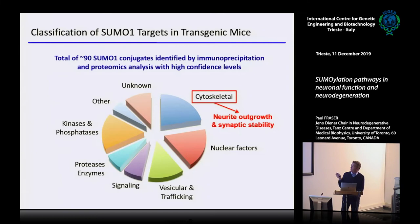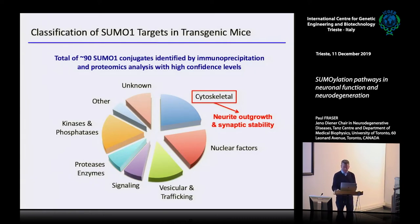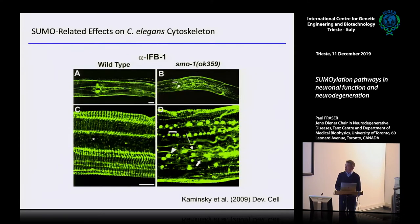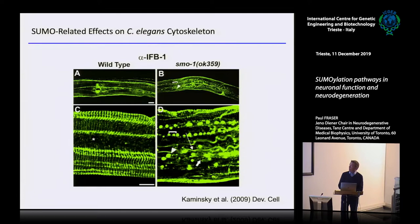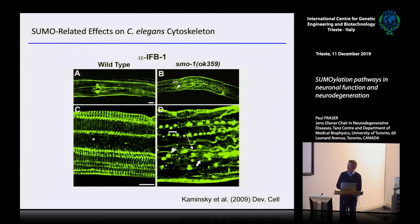The other proteins we were very interested in were cytoskeletal ones, involved in neurite outgrowth and dendritic spine stability. There had been some precedent for SUMOylation linked to the cytoskeleton — in C. elegans, which has one SUMOylation factor, SMO-1, knocking it out has a very dramatic effect on intermediate filaments, so that the integrity of their assembly is completely lost, and these animals have virtually no intermediate filament architecture.